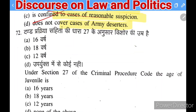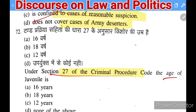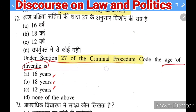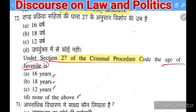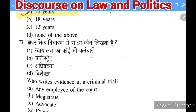Next question under CrPC Section 27: the age of a juvenile is — 16 years, 18 years, 12 years, or none of the above. The right answer is 16 years.